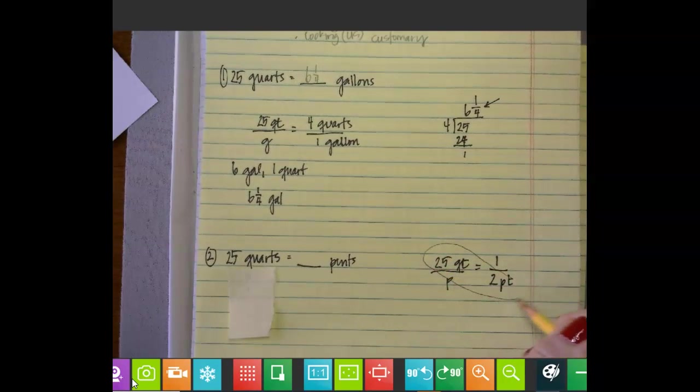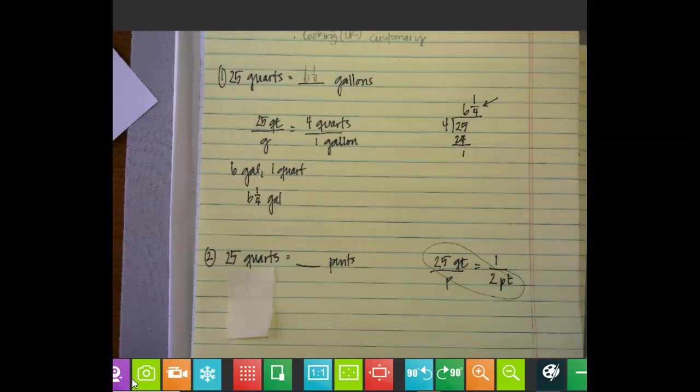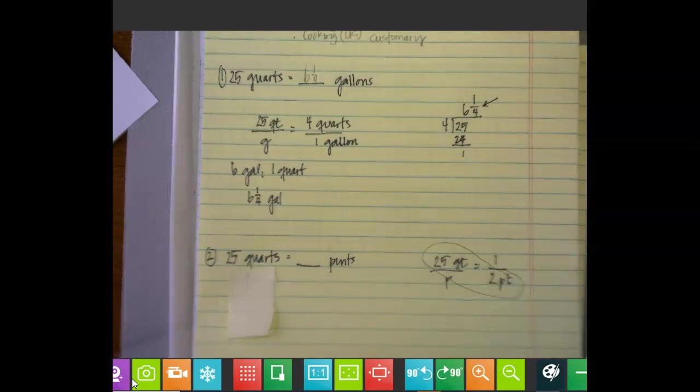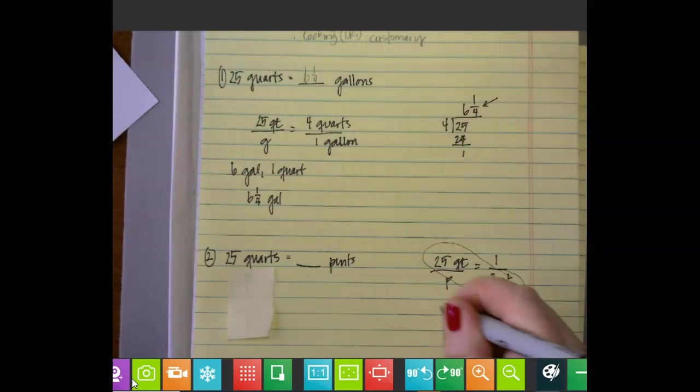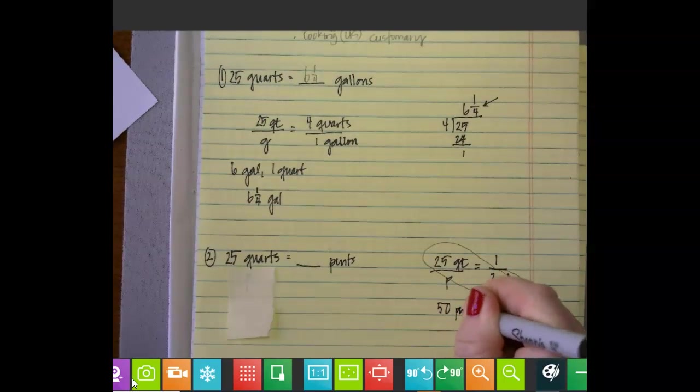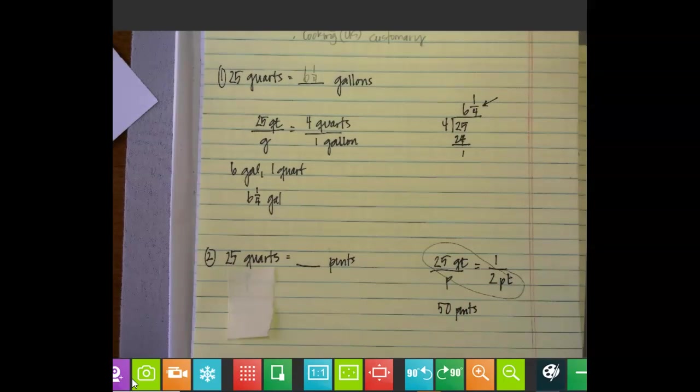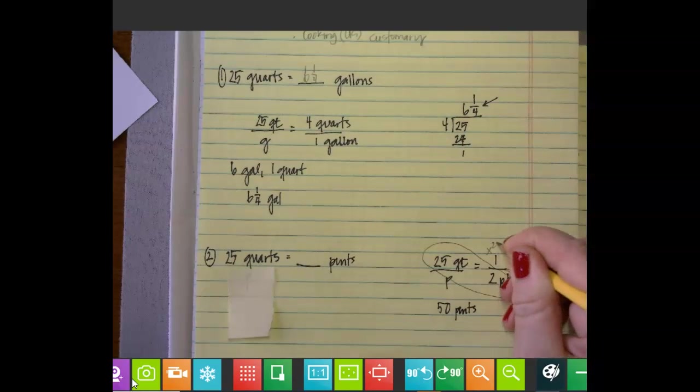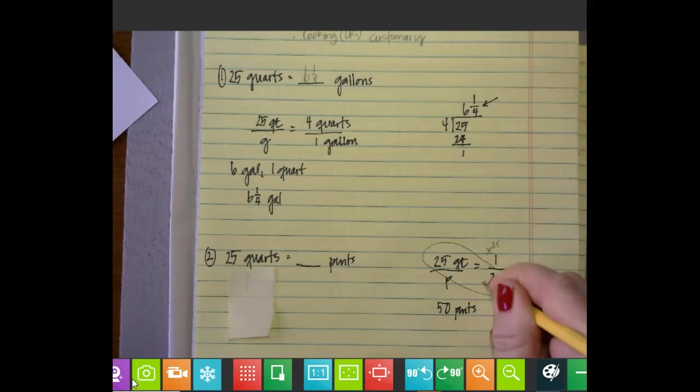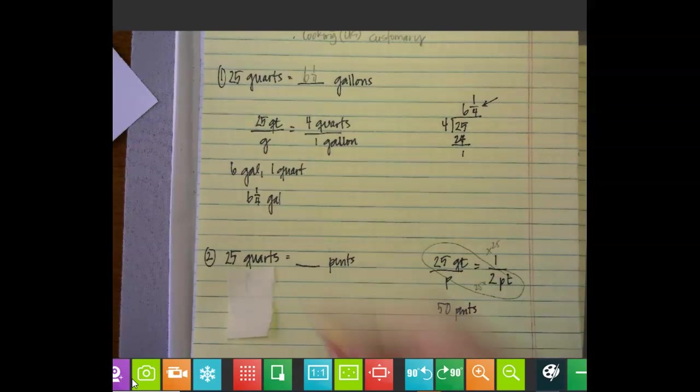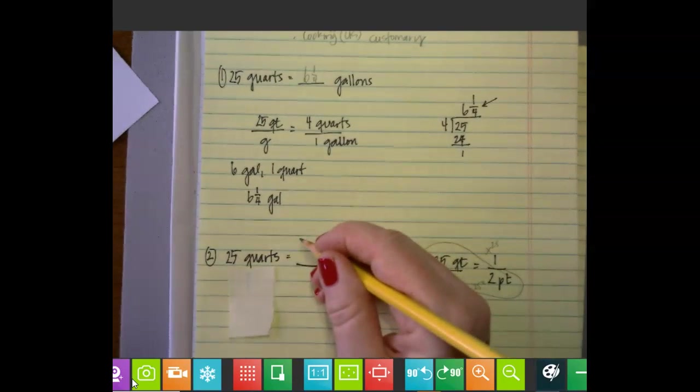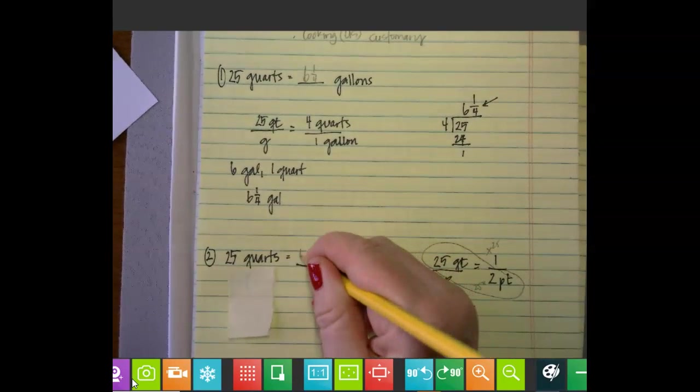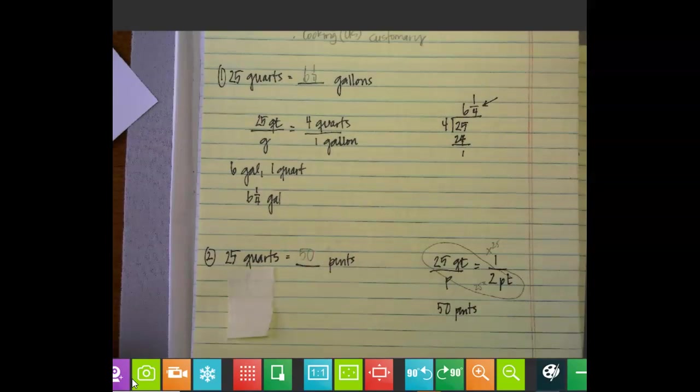You could cross multiply to get your answer for P, so 50 pints. The mathematical reasoning is the exact same. I will set this up though, so one goes into 25, 25 times, and then we do the same thing here. We still come up with 50 pints. So 25 quarts equals 50 pints. That's a lot of ice cream.